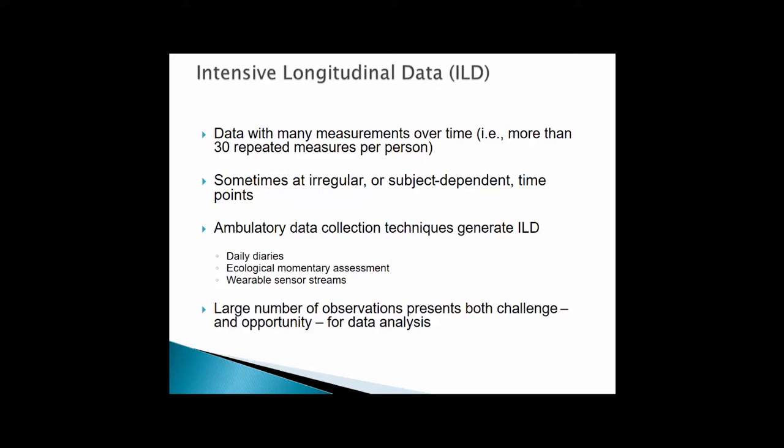There's no real hard and fast rule for what constitutes intensive longitudinal data. One rule of thumb is data with many measurements over time — more than 30 or so repeated measures per person. Typically in a panel data set we might have five to ten observations per person, but an intensive longitudinal data set has substantially more than that. Another feature is that it's often sampled at irregular or subject-dependent time points, such as five random prompts throughout the day.